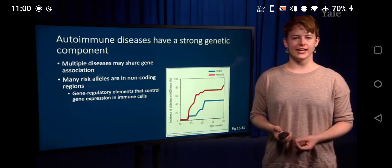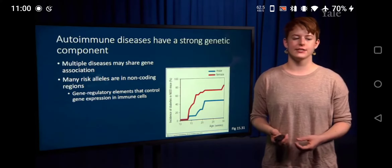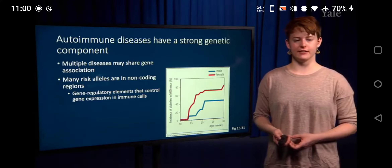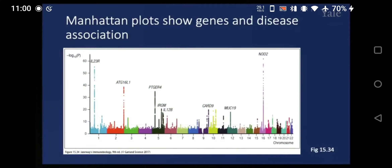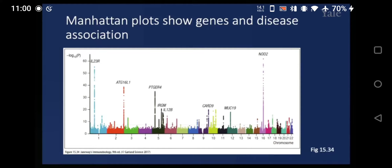We can look at this by what's called a Manhattan plot. On the x-axis we have the different areas by number on the chromosome, with each color representing a different chromosome. Then we have the association of that region of the genome with our disease. These peaks — which would be the skyscrapers in a city like Manhattan, hence the name — show genes that are highly associated with development of the disease.